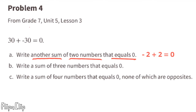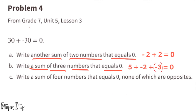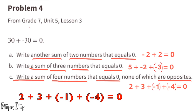Part B: write a sum of three numbers that equals 0. For example, 5 plus negative 2 plus negative 3 equals 0. Part C: write a sum of four numbers that equals 0, none of which are opposites. For example, 2 plus 3 plus negative 1 plus negative 4 equals 0.